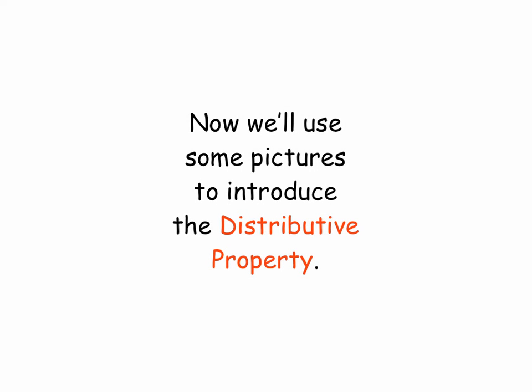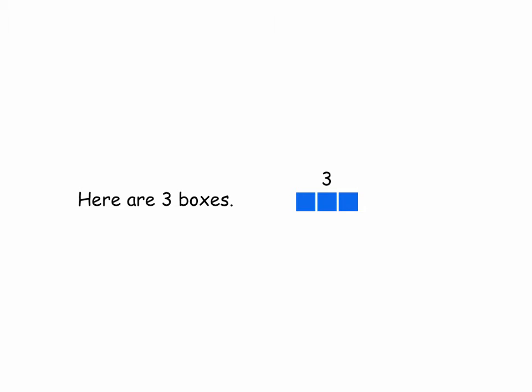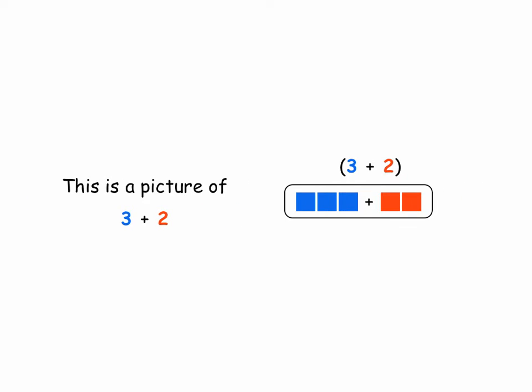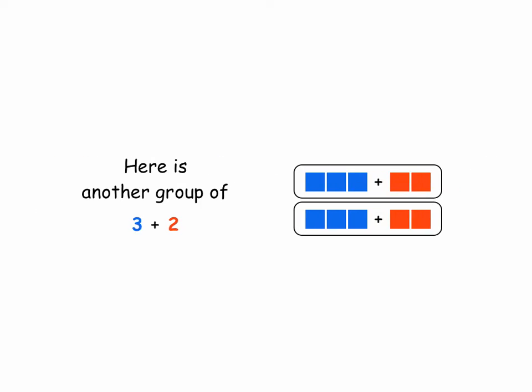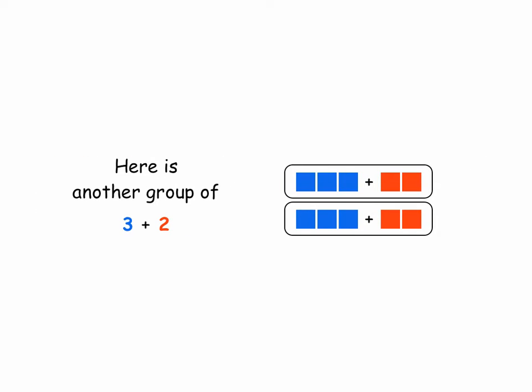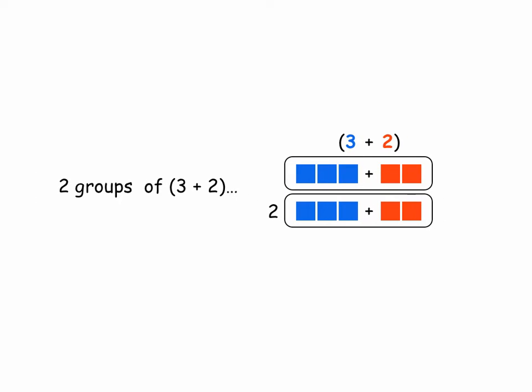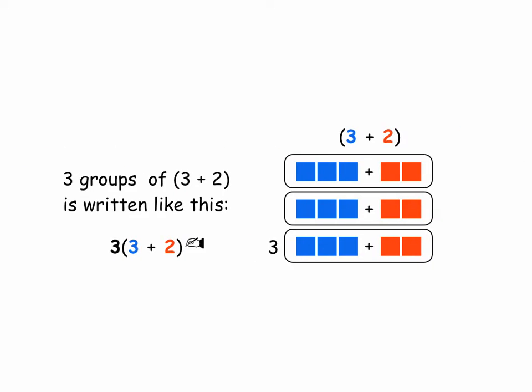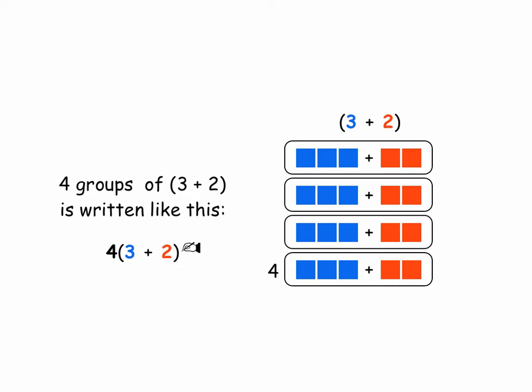Now we'll use some pictures to introduce the Distributive Property. Here are three boxes. Here are two more boxes. This is a picture of three plus two. Here is another group of three plus two — two groups of three plus two. Two groups of three plus two is written like this: two in front of the parentheses, three plus two inside the parentheses. Three groups of three plus two is written like this. And four groups of three plus two is written like this.